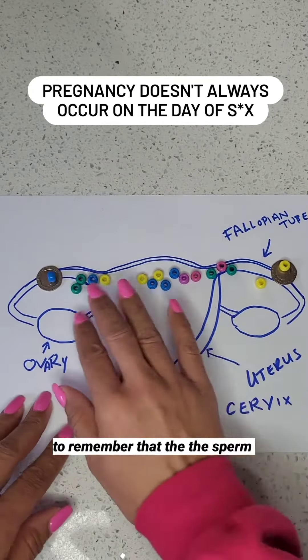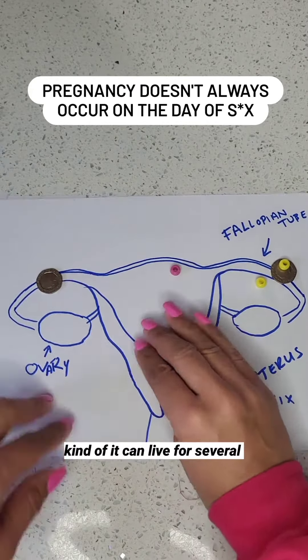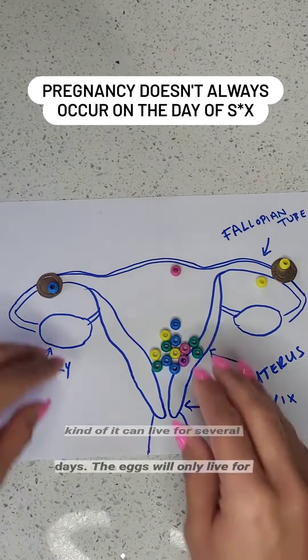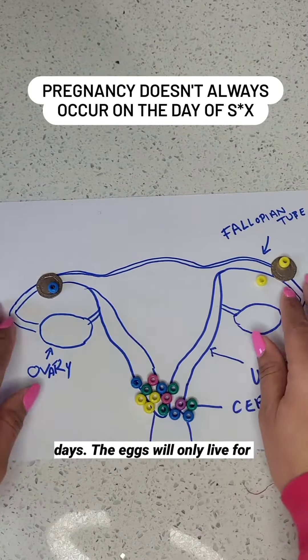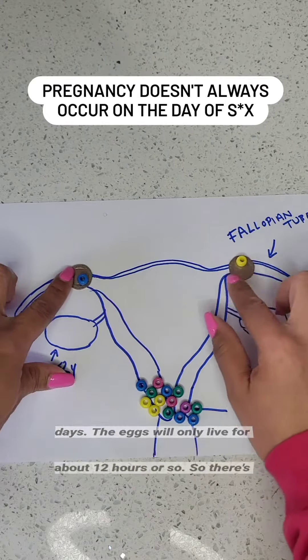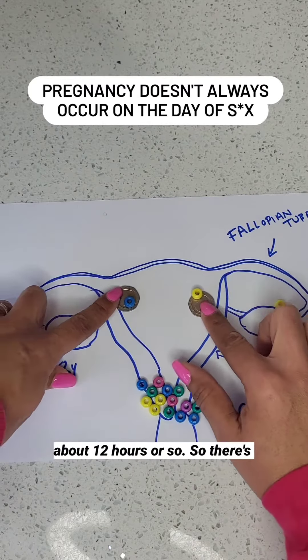You have to remember that the sperm can live for several days, whereas the eggs will only live for about 12 hours or so, so there's only a 12-hour window for the eggs to be fertilised.